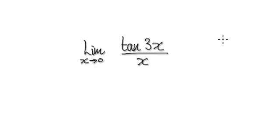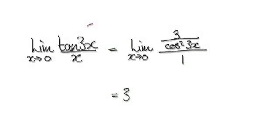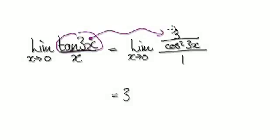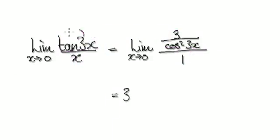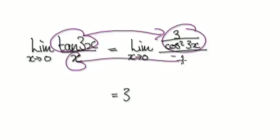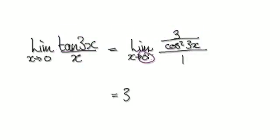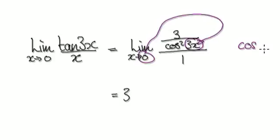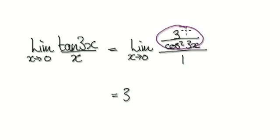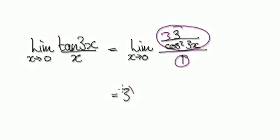So you know you can apply L'Hôpital's rule — this is of the form 0 over 0. Differentiate the numerator — that gives you this. And differentiate the denominator — that gives you this. As x tends to 0, put it in: cos of 0 is 1, and then you've got to square it, so that's 1. So 3 over 1 is 3. The whole limit equals 3.